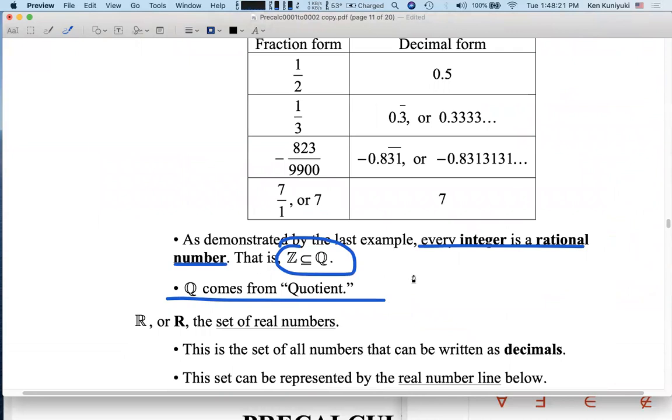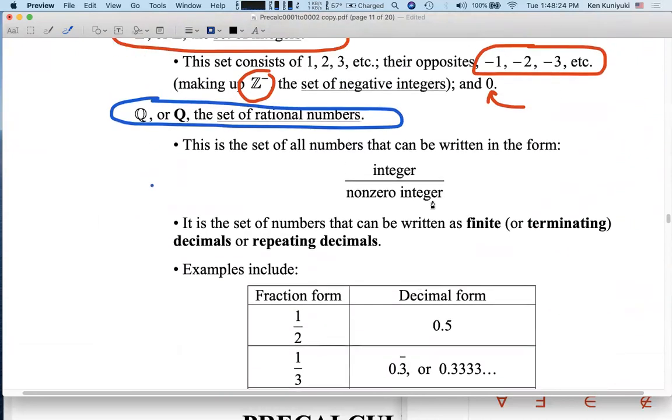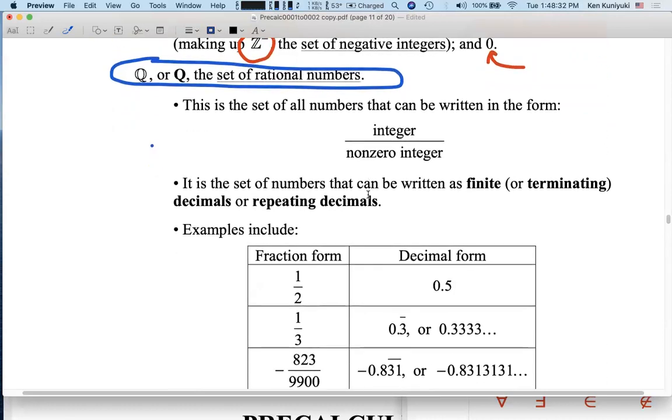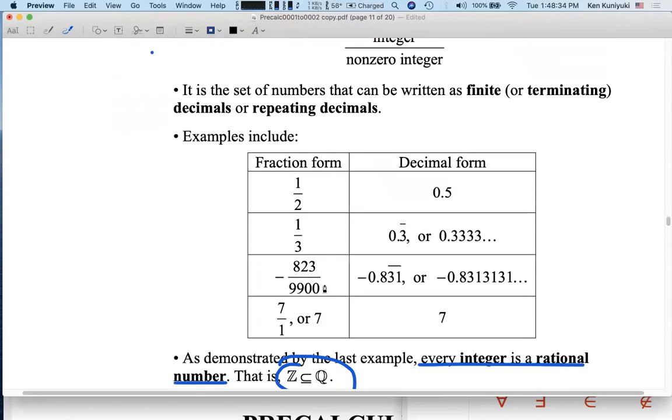Q, by the way, comes from quotient, right? If you divide an integer by a non-zero integer, you're taking a quotient of integers, you get a rational number. We often think of these as fractions of integers, positive or negative, or zero.